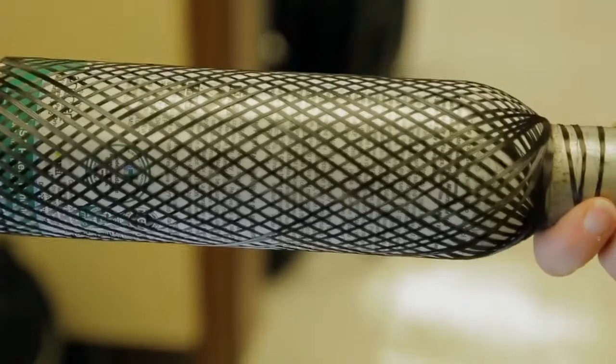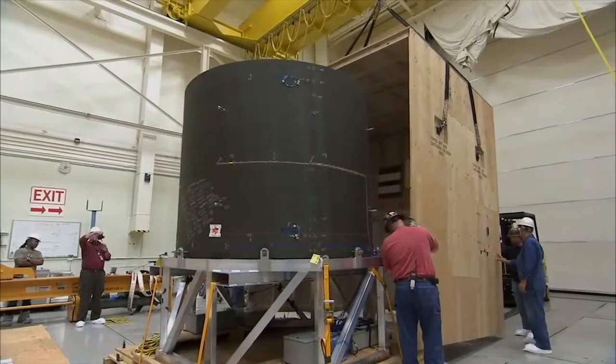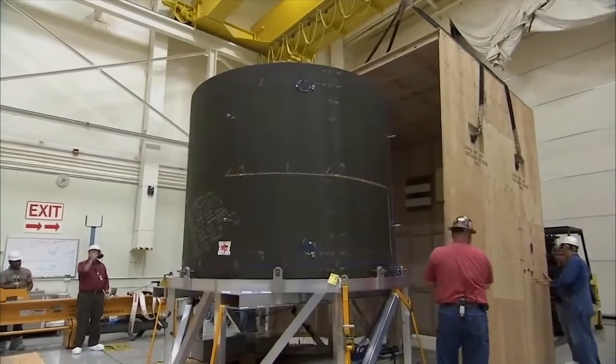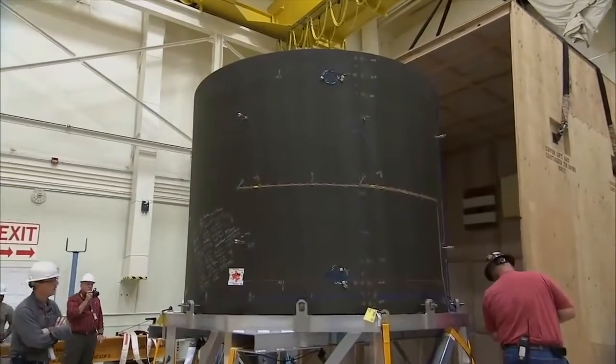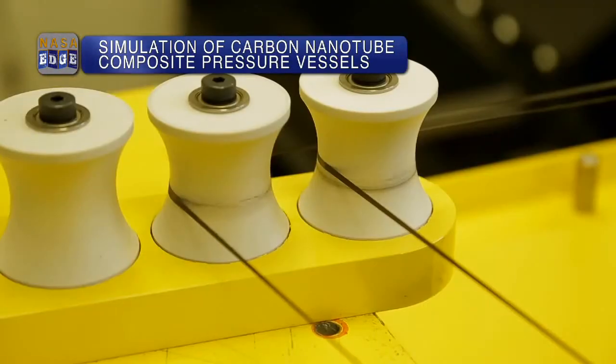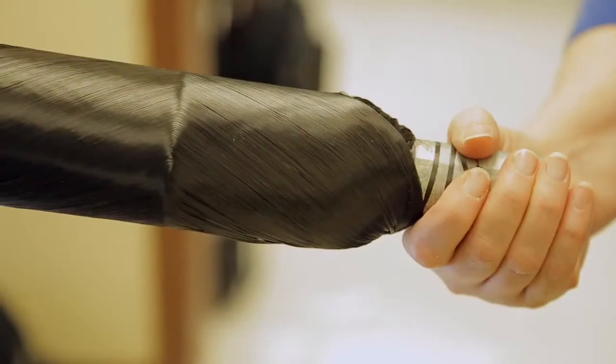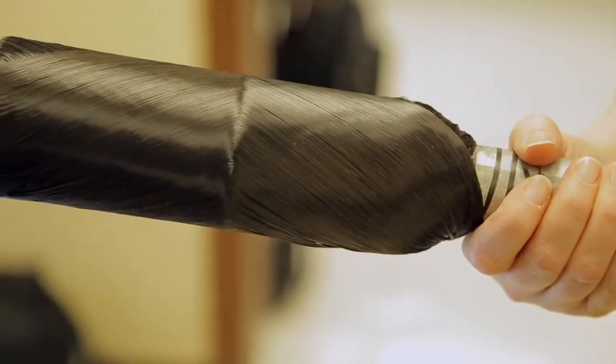Haven't we launched, like, composite overwrapped vessels before? What's unique about this one? So, COPVs have been on NASA for a long time. The only difference here is that we're using carbon nanotubes instead of carbon fibers, which is the typical material that we use for the COPVs. Now we're transitioning into carbon nanotubes, and that's actually making the material two times stronger than carbon fiber and also lighter. And that's the game-changing part of it.